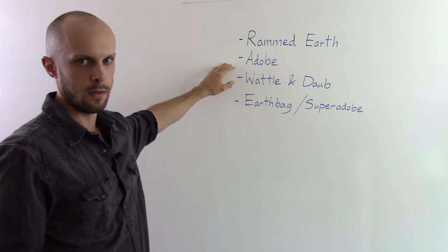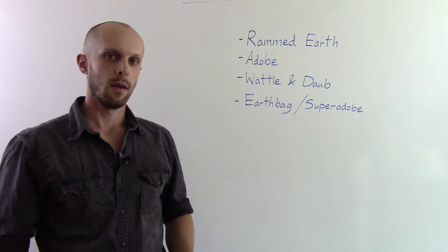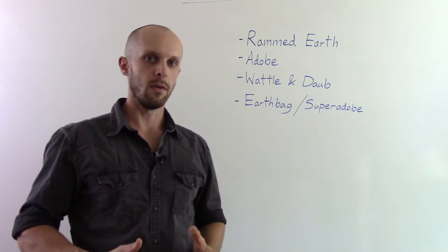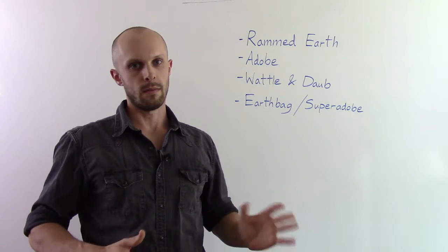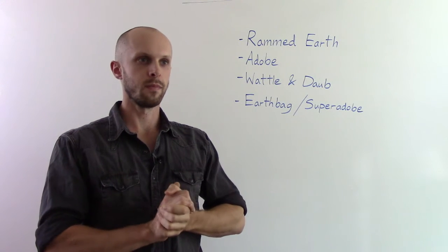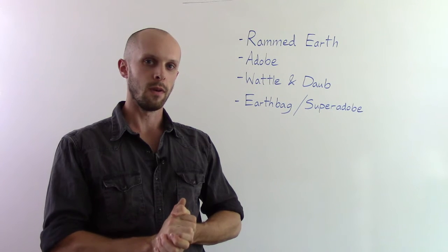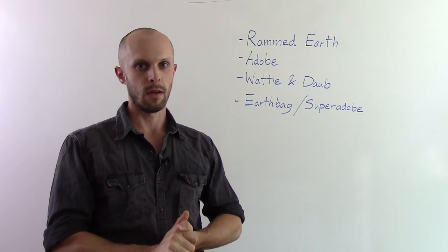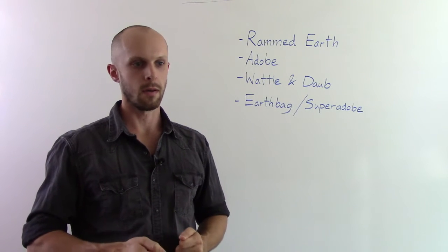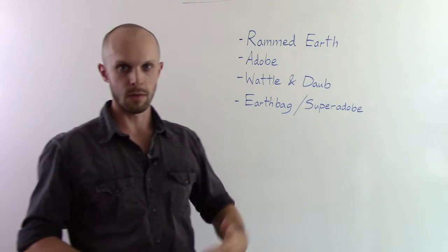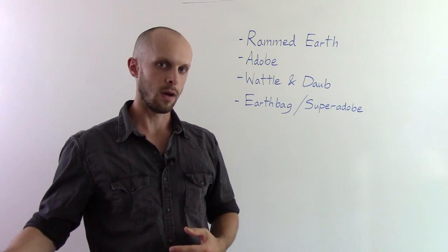So the next material is adobe, also sometimes known as mud brick. So adobe is probably the most ancient form of earth building, thousands of years old. There's examples in Jericho, almost 10,000 years old. So we're looking at very ancient here. And it's still used up to this day, especially in the Middle East, but also other parts of the world as well.